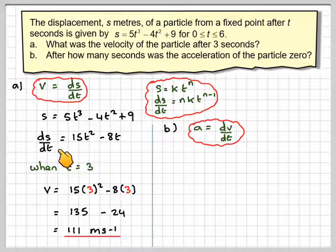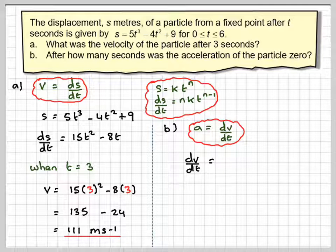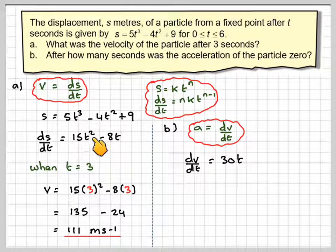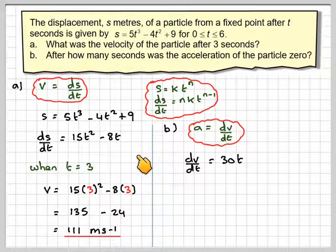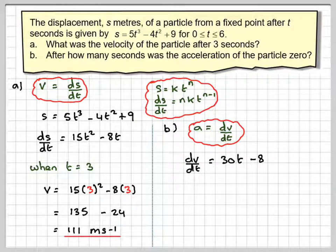Part B, if you want to find the acceleration from velocity, you have to differentiate this again. So differentiating again, we're going to have 2 times 15, which is 30t, and if we reduce the power by 1, this will become t to the power of 1. If we differentiate minus 8t, all you get is minus 8.